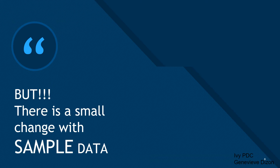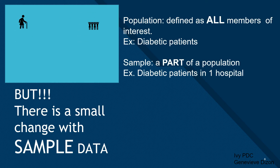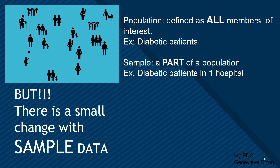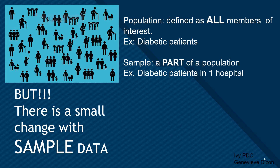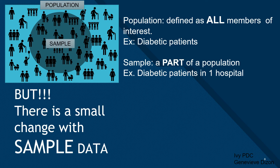There is a small change if the data is considered sample data. In statistics, it is very important to distinguish between a population and a sample. A population is defined as all the members of interest — for example, all the test results of diabetic patients. A sample is only a part of the population; for instance, if we only include diabetic patients from one hospital, our data becomes sample data. A sample is never the whole population — it is a selection taken from an identified population.